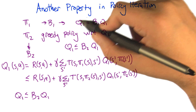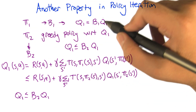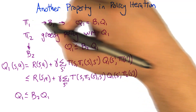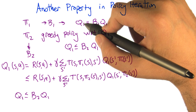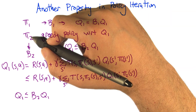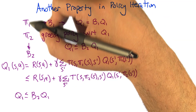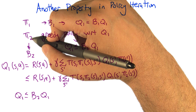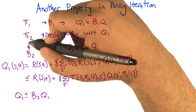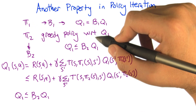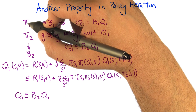So let's imagine we've solved out Q1 — this is sort of how policy iteration works. You start off with a policy, you get the value function of that policy. Then we're going to take the greedy policy Pi2 with respect to Q1. So up to this point Pi1 and Pi2 were just arbitrary policies, but now Pi2 is specifically the greedy policy with respect to the value function defined by Pi1.